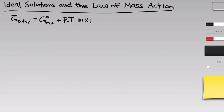This equation is the essential result of the study of ideal solutions: when we take an ideal component and dissolve it in an ideal solution, its partial molar free energy equals the standard molar free energy of the pure substance plus RT natural log of the mole fraction X sub i. What we want to do now is apply this free energy to a chemical reaction in solution. Let's look at the reaction of ethine, C2H2, with two moles of HCl to form C2H4Cl2, assuming this is all happening in the gas phase so all components appear in the equilibrium expression.